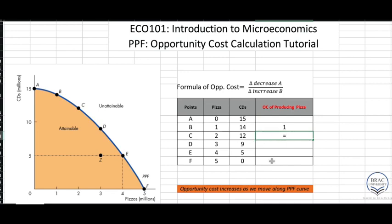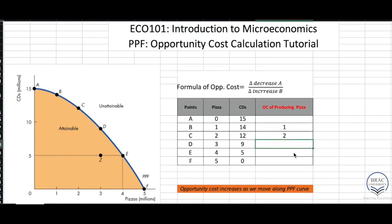Next, moving from point B to point C, the same application holds. As you can see in the graph, we are producing more pizza and fewer CDs. The numbers this time are: 14 minus 12 divided by 2 minus 1, which gives us the second opportunity cost.